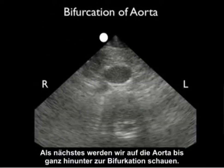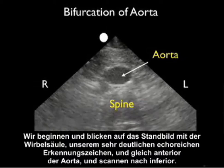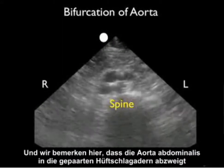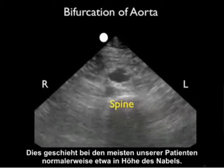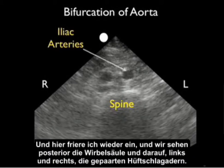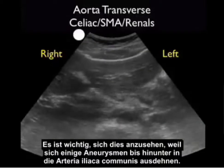Next we'll look at the aorta all the way down to bifurcation. We'll begin with a frozen image showing the spine — our very pronounced hyperechoic landmark — and the aorta just anterior, scanning inferiorly. We'll notice that the abdominal aorta branches into the paired iliac arteries, usually occurring just at about the level of the umbilicus in most patients. Freezing again, we see the spine posteriorly and just on top of that the paired iliac arteries, right and left. It's important to look at this, as some aneurysms will extend all the way down into the iliac artery.